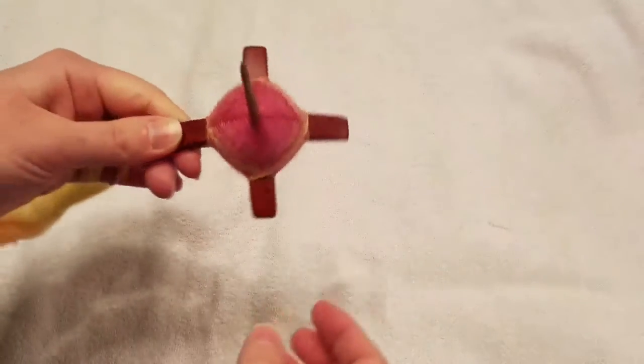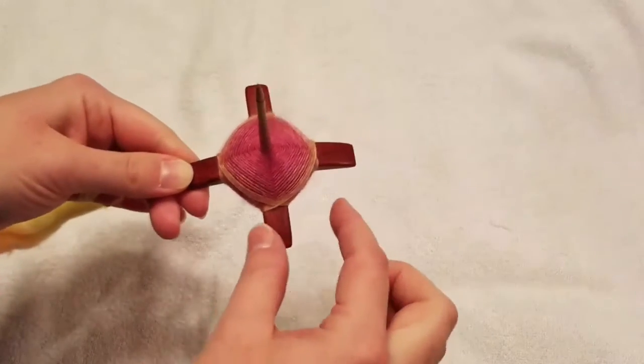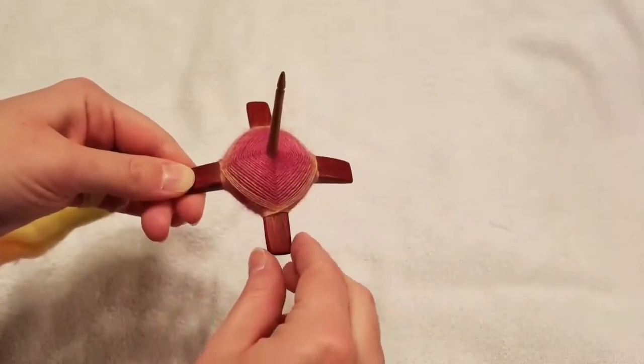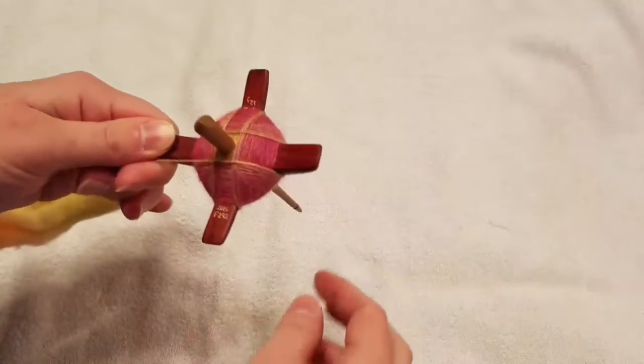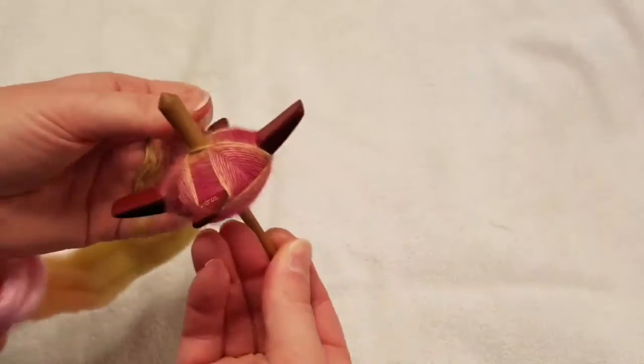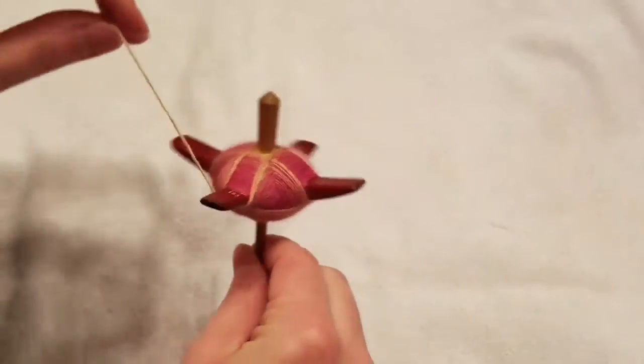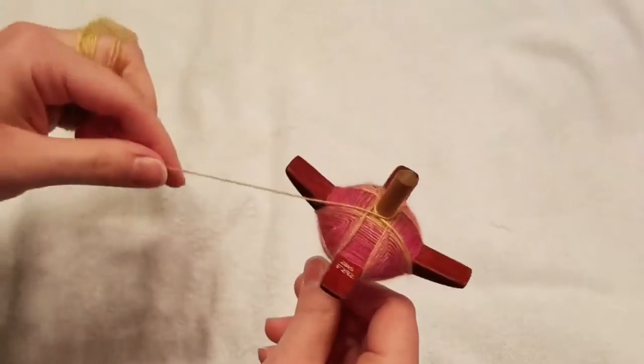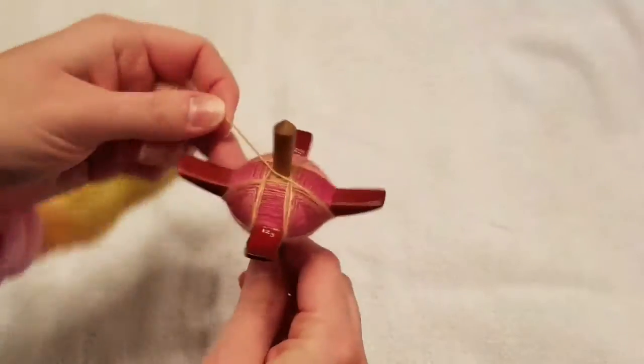So I generally when my cop gets about this big on a spindle, I start doing two layers on top, which I've done, and then I flip it over and do one layer on the bottom. So I wanted to kind of show you what that looks like. It's pretty much the same thing as winding on top, except you flip the spindle over.